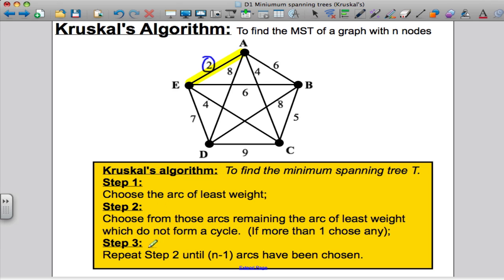Then it says, repeat step two until you have n minus one arcs. So I've got five nodes here until I've got four arcs. The key thing here, though, look at step two. When I'm choosing those arcs, I've got to make sure that none of the arcs end up forming a cycle in my spanning tree, else it would not be a spanning tree.